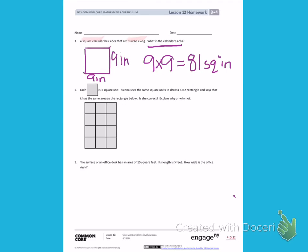Number 2. Each square is one square unit. Sienna uses the same square units to draw a 6 by 2 rectangle, and says that it has this same area as the rectangle below. Is she correct? Explain why or why not.